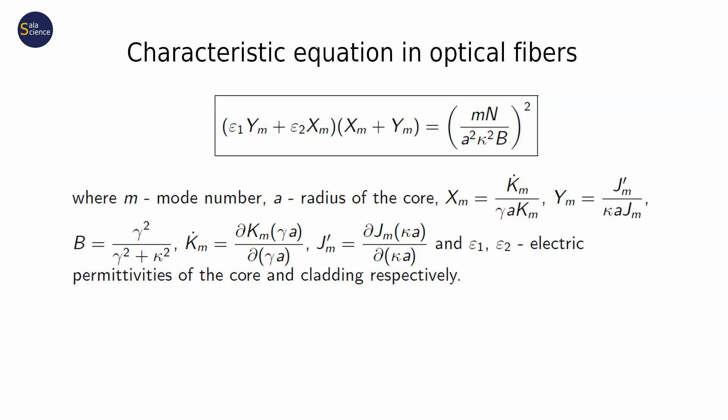Each solution corresponds to a particular mode, a particular distribution of the electric field. In other words, to some shapes of the electric field that can be propagated in a fiber. These propagation constants are the only unknown values, and are part of gamma and kappa coefficients. All other parameters are known.